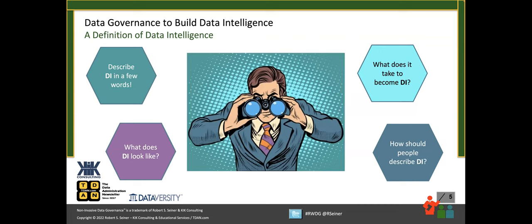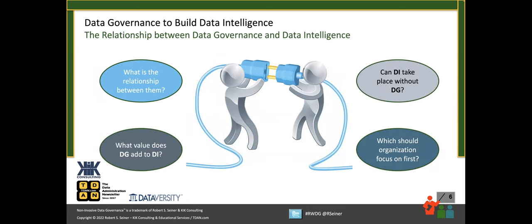Bob says he sees data intelligence as being both a means and an end — just another buzzword. Last month this webinar talked about data literacy. If your organization is using both of these terms, they may not be interchangeable; as Dave said, be consistent in how you define them and stick to it. The next thing to discuss is the relationship between data governance and data intelligence. If it's a tool, that's one relationship. If it's a result we're trying to achieve, it's another relationship. What are your thoughts on that relationship?